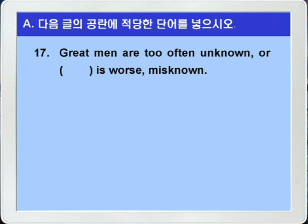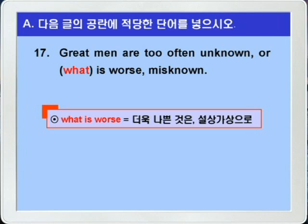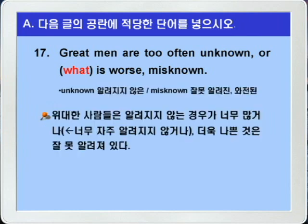17번입니다. 'blank is worse'를 보면 worse가 있으니까 정답은 what이 되겠습니다. 'What is worse'하면 '더욱 나쁜 것은, 설상가상으로'라는 뜻이죠. 해석해보면 — unknown은 알려지지 않은, misknown은 잘못 알려진, 와전된 — 'Great men are too often unknown', 위대한 사람들은 너무 자주 알려지지 않는다. 'or what is worse', 더욱 나쁜 것은, 설상가상으로, 'misknown', 잘못 알려지는 것이다. what을 포함하는 관용표현 중 'what is 비교급' 이런 형태가 되면 '더욱 뭐뭐한 것은, 게다가'라는 의미를 갖죠.